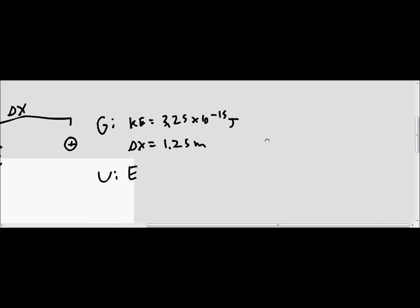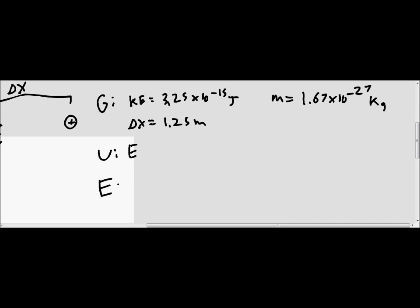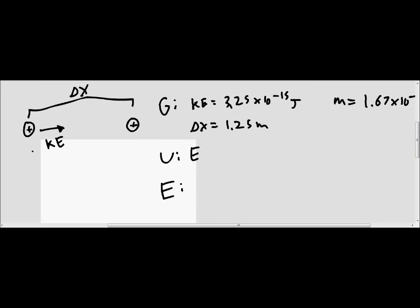On the formula sheet it says that the mass of a proton is 1.67 times 10 to the negative 27 kilograms. From here we can use that to help us find the initial velocity the proton is traveling at. Then we find its acceleration, then the force needed, and because we have the force we can calculate the electric field.